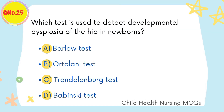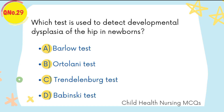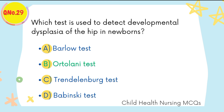Question number twenty-nine: which test is used to detect developmental dysplasia of the hip in newborns? B is the right option: Ortolani test.